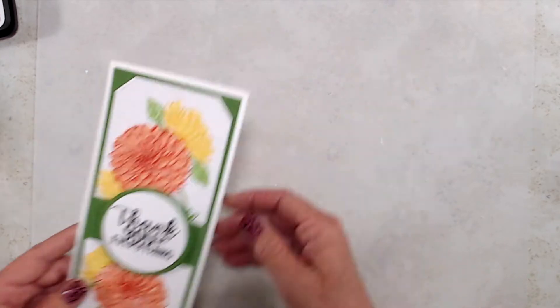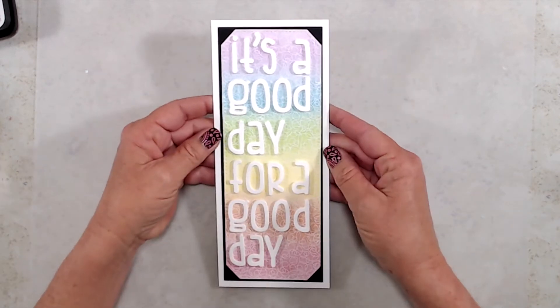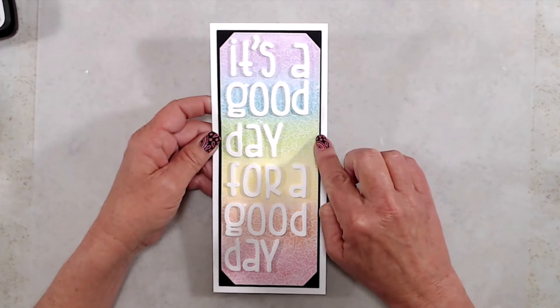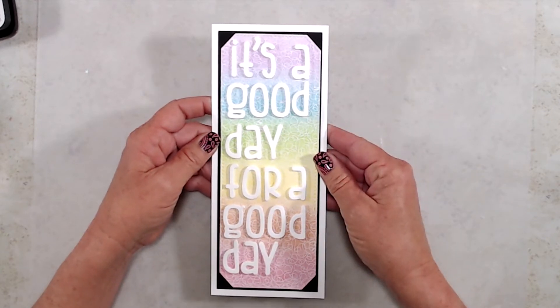And for my second sample, I did some ink blending and emboss resist. And again, I used the second largest die and covered the front of the card with a whole bunch of words using the new cutie alphabet die set.